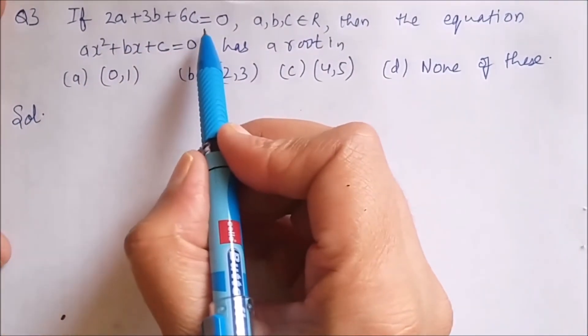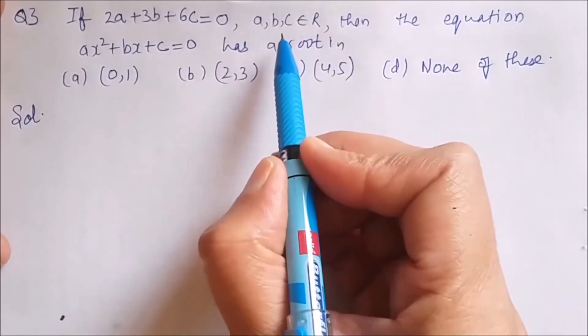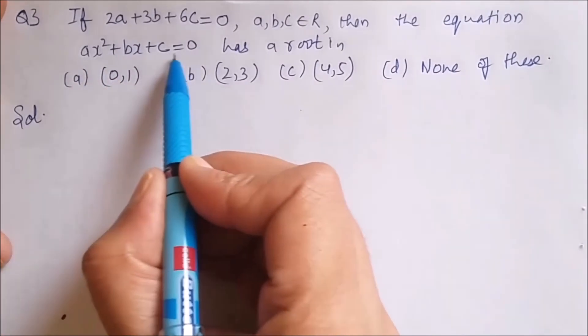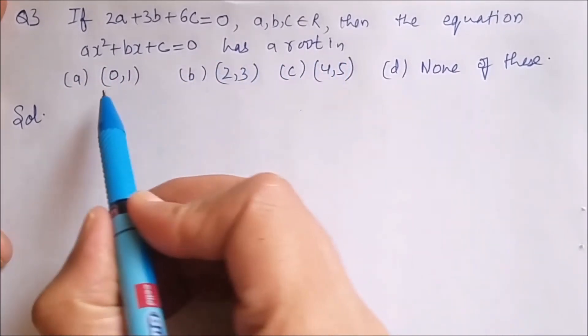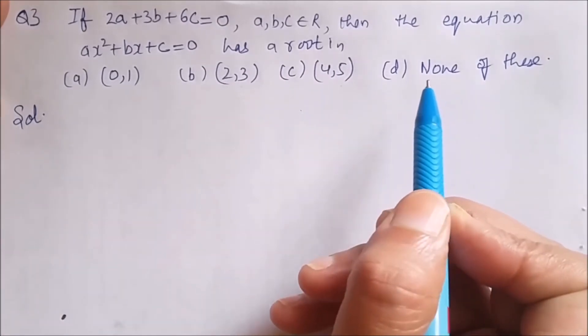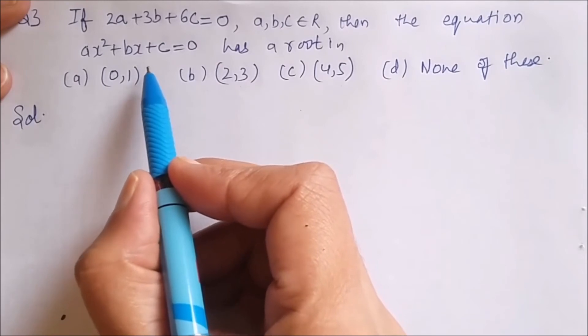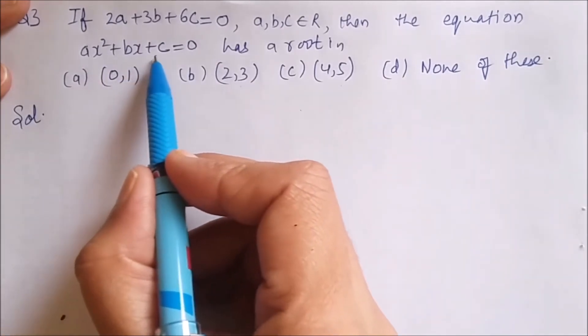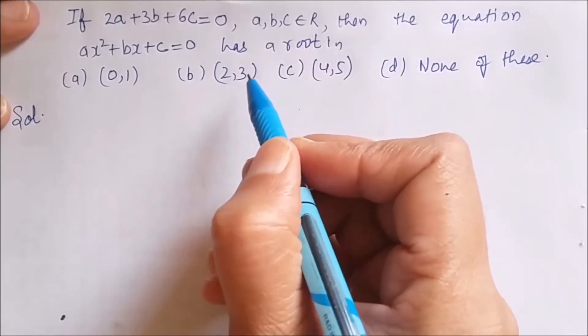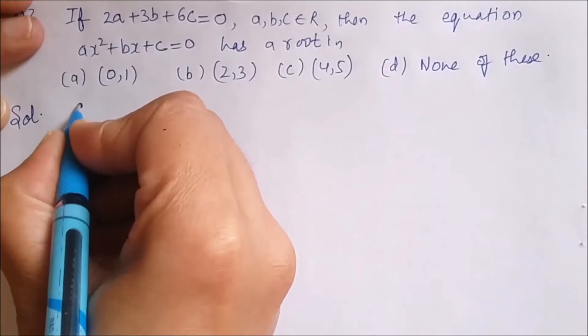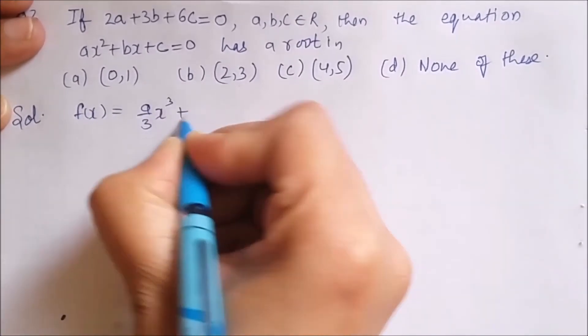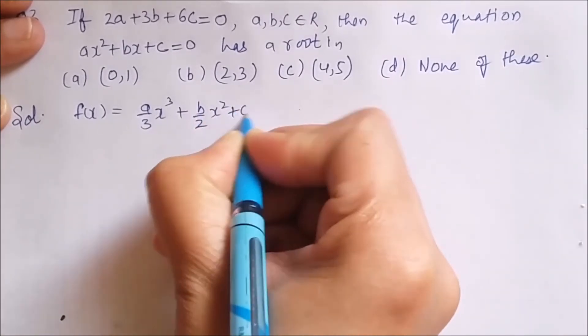Question number 3. If 2a + 3b + 6c = 0 and a, b, c belong to R, then the equation ax² + bx + c = 0 has a root in interval (0,1), (2,3), (4,5) and none of these. Friends this is a challenging problem. This question is based on Rolle's theorem. Let us consider our function f(x) = (a/3)x³ + (b/2)x² + cx.